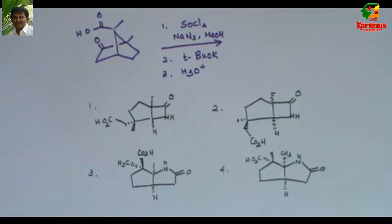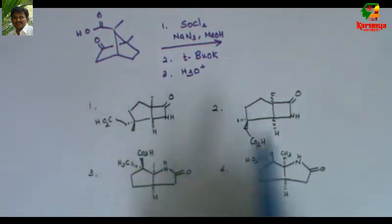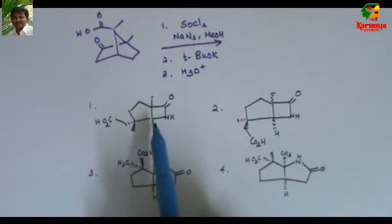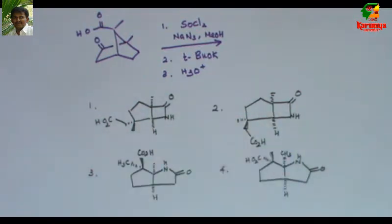The given options are here. All four are bicyclic lactams. In the first and second, the lactam is a four-membered ring, but in the third and fourth, it is a five-membered ring. Which one is correct?